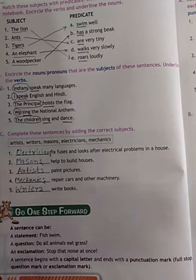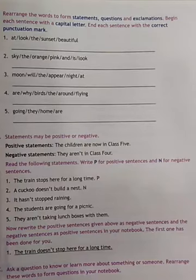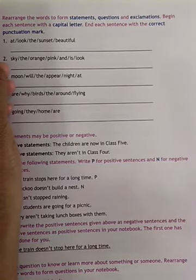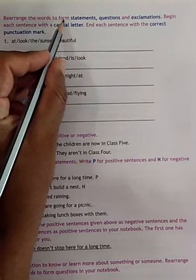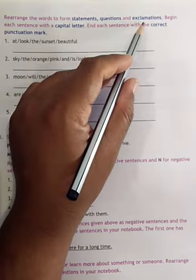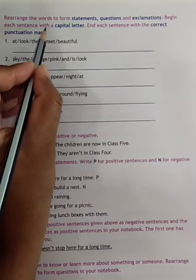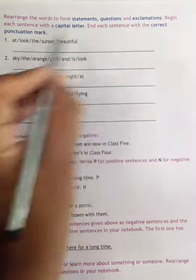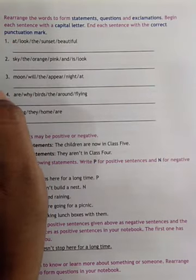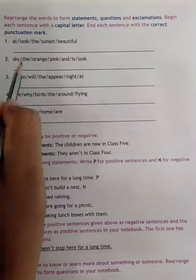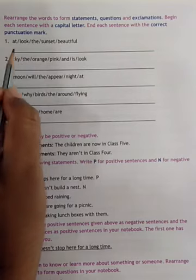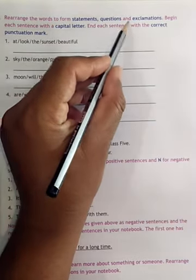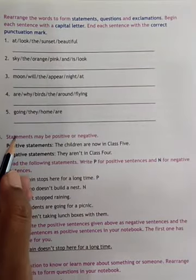Now, let's see exercise. Now, move to page number 13 of textbook. Here is the question. Rearrange the words to form statements, questions and exclamation. Begin each sentence with a capital letter. End each sentence with the correct punctuation mark. These are the jumbled words given in the example. Now, we have to make it statement, whether it will be questions or exclamation. So, we have the first one.